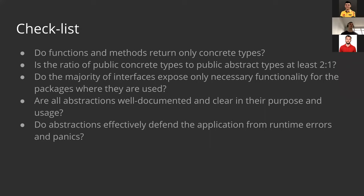Ask yourself: Do functions and methods return only concrete types? It's good practice to return concrete types everywhere. Is the ratio of public concrete types to public abstract types at least one-to-one, or two-to-one? Concrete types versus interfaces — keep it not too abstract. Do the majority of interfaces expose only the necessary functionality of the packages where they are used? We tend to combine different contracts together and make large interfaces — keep it simple, split into pieces, and let the client use only what's necessary.